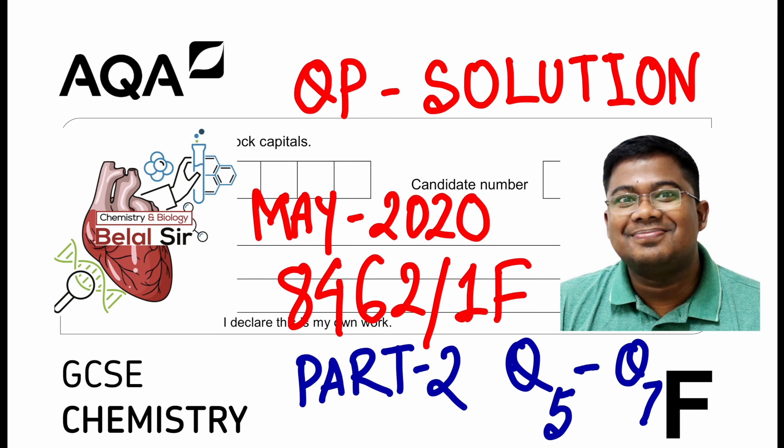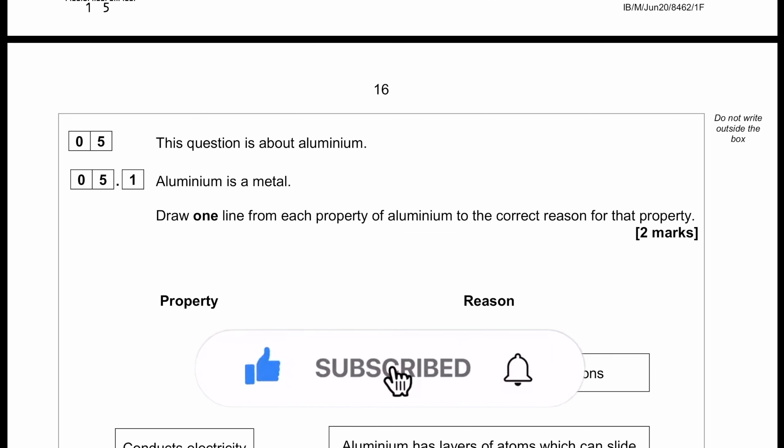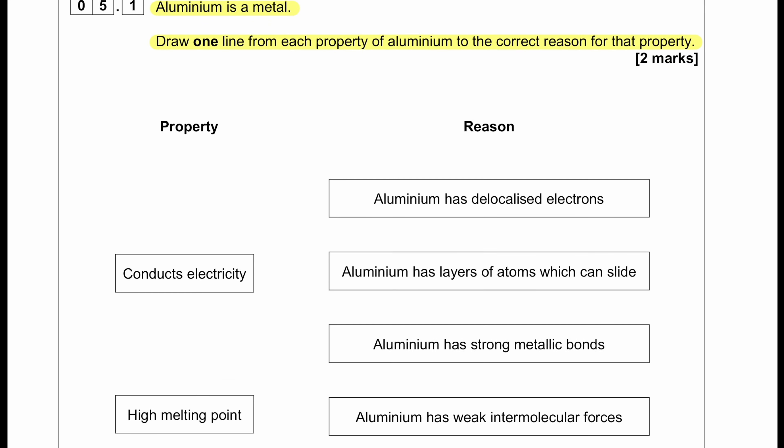Hello everyone, today we will be solving AQA GCSE chemistry May 2020 part 2. In this video we are going to be solving from question number five to question number seven. This question is about aluminium. Draw one line from each property of aluminium to the correct reasons for that property.